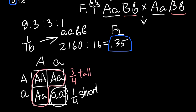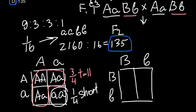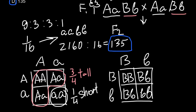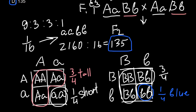And for the second trait — color of the flowers — white is dominant over blue. When we build a Punnett square with both parents heterozygous for flower color, we see the same ratios: three-quarters would have white flowers and one quarter would have blue flowers.